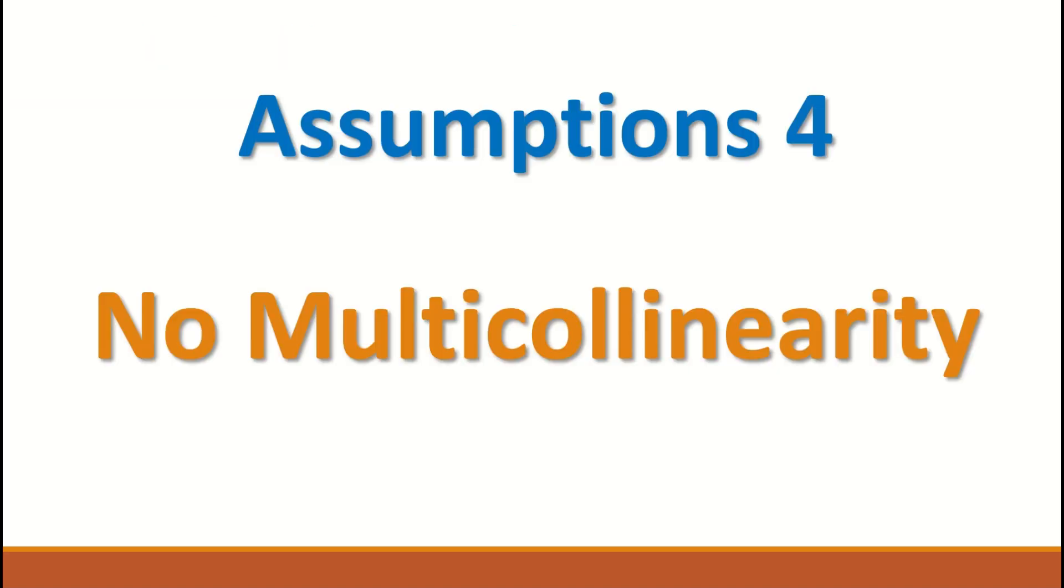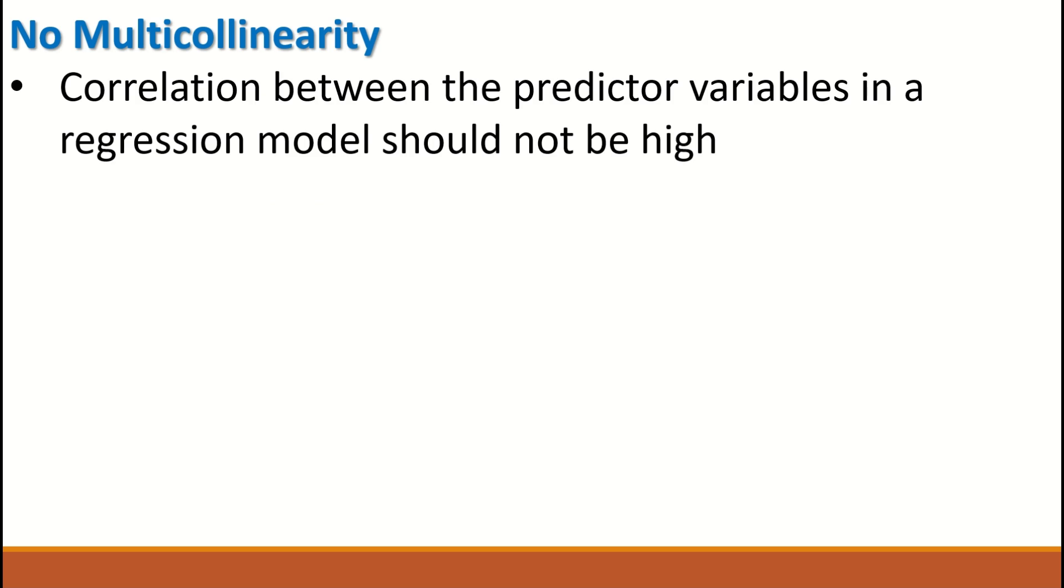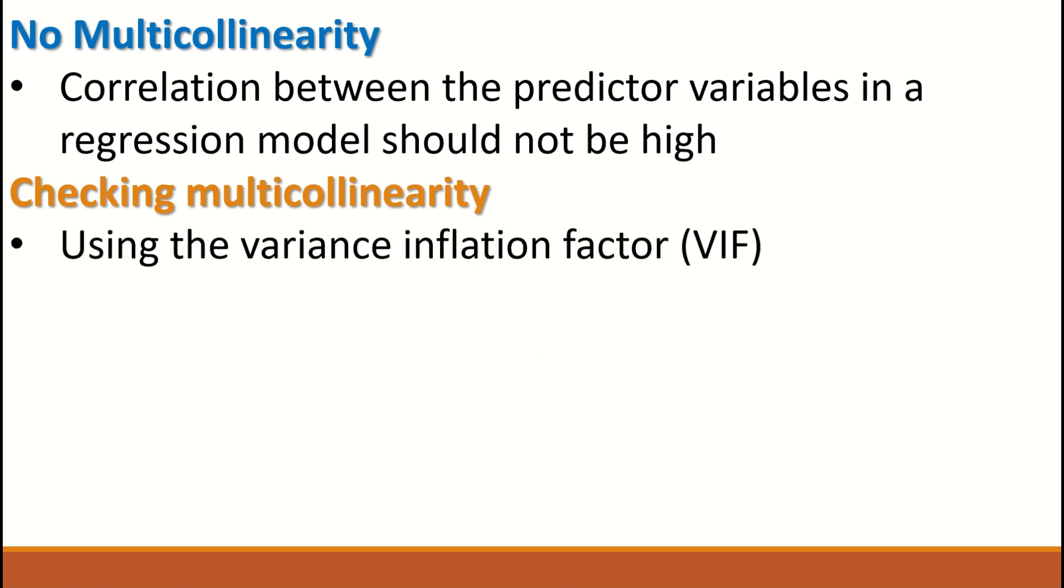The fourth assumption is that there is no multicollinearity. What does multicollinearity mean? It means that there is a correlation between the predictor variables. So for no multicollinearity, the correlation between the predictor variables in the regression model should not be high. How do we check multicollinearity? By using the variance inflation factor, abbreviated as VIF.